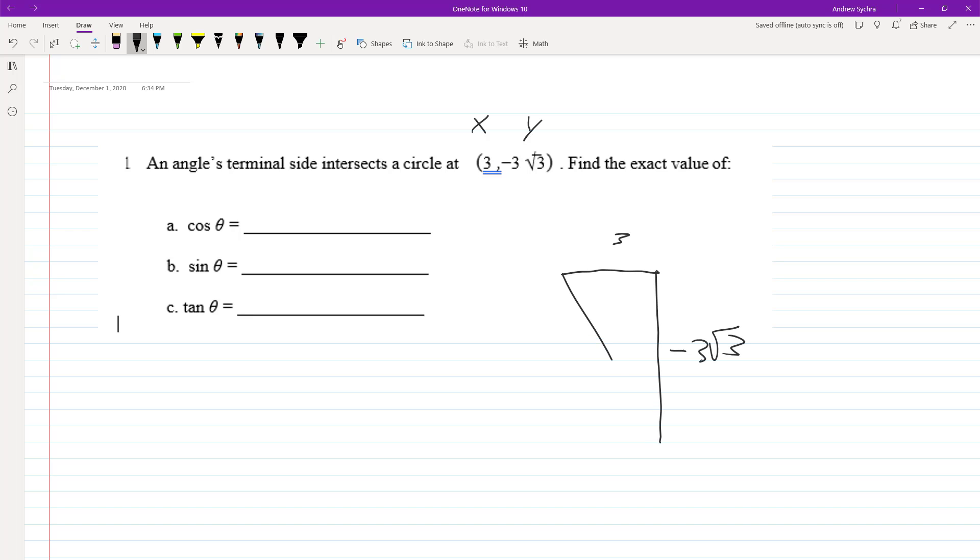You can reduce these down to 1 and negative root 3 because the 3 is factored out. It's a 30, 60, 90 triangle. Essentially this is 60 below, so this is actually at 300 degrees.